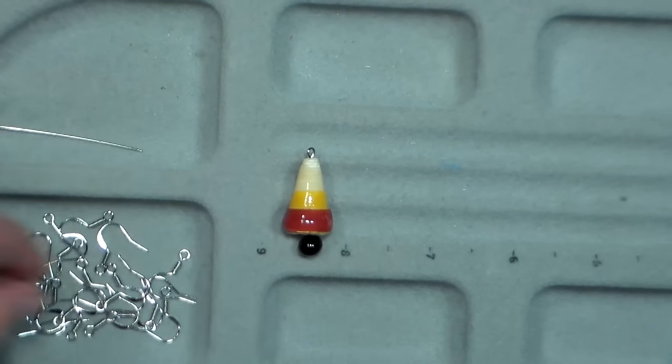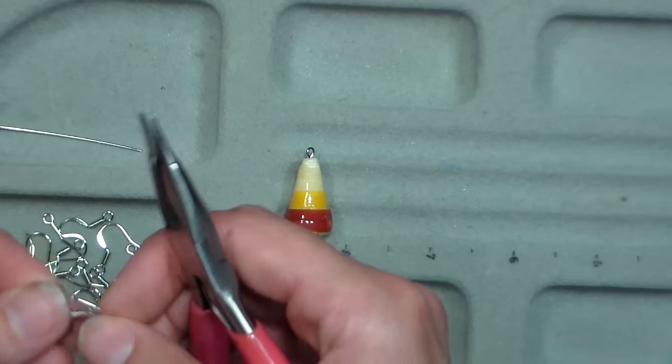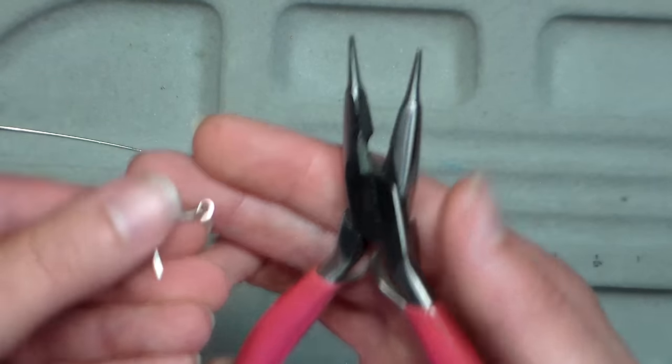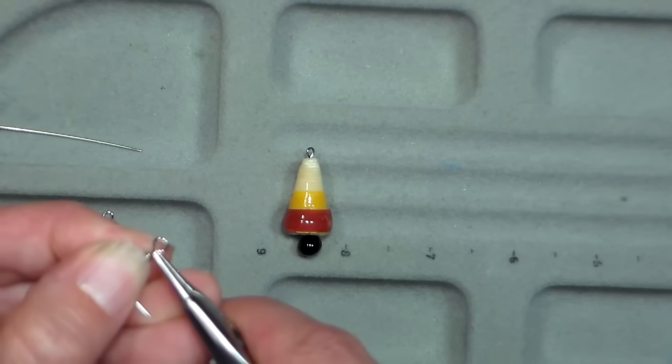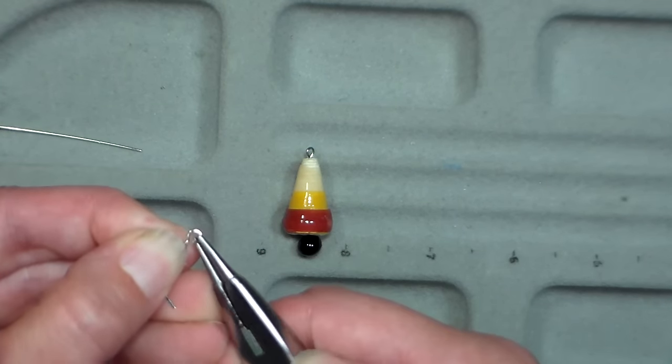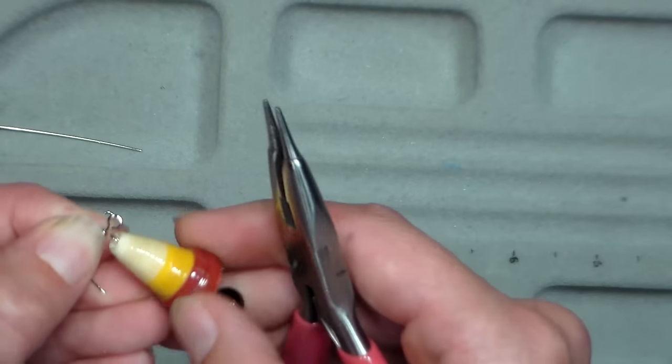Then you're gonna take an ear wire. Look at the bottom of the ear wire, it looks like a fishing hook. On the end you're gonna notice one side, you're gonna find the end of that wire. On the end part you just want to twist it up and it makes a little gap.